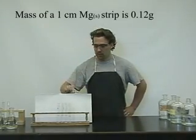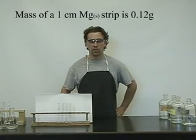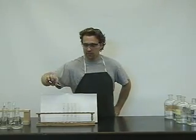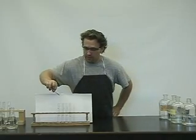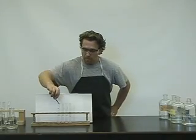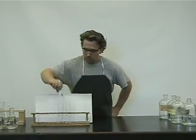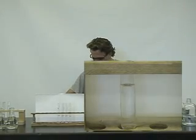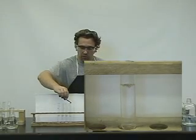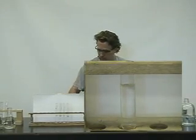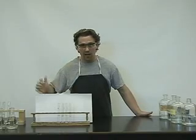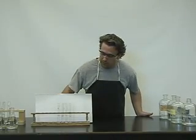Each piece of magnesium metal has a mass of 0.12 grams. We will start off by placing them into the respective test tubes and watching the reaction rate. You'll notice immediately there is an exothermic reaction producing a gas. When magnesium reacts with hydrochloric acid, hydrogen gas is produced. We will place that aside and come back to it in a moment.